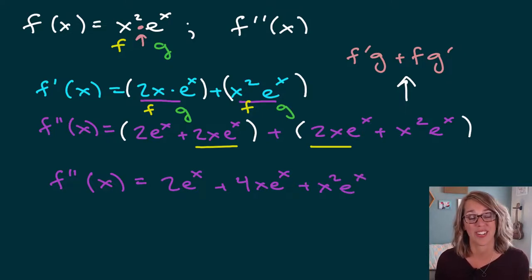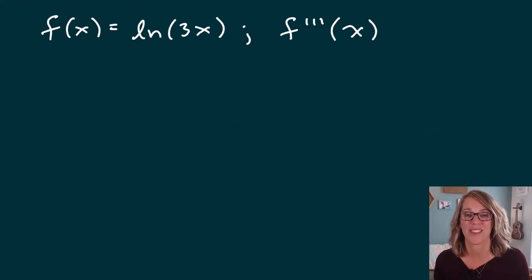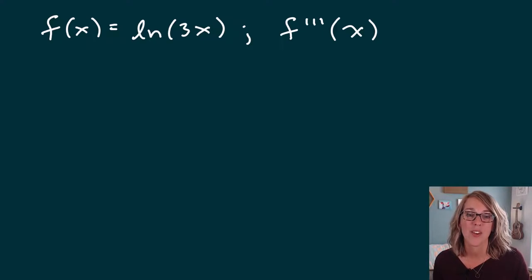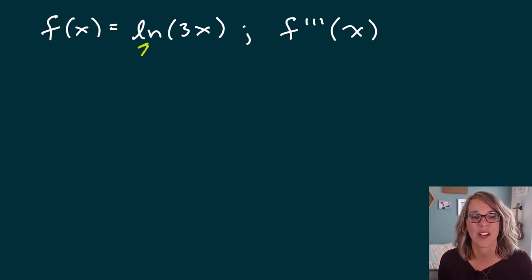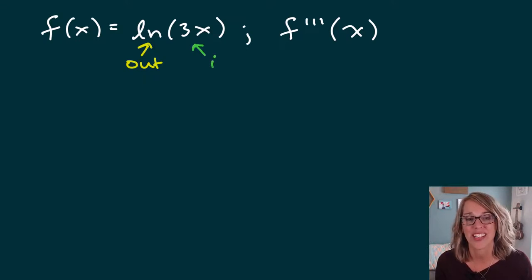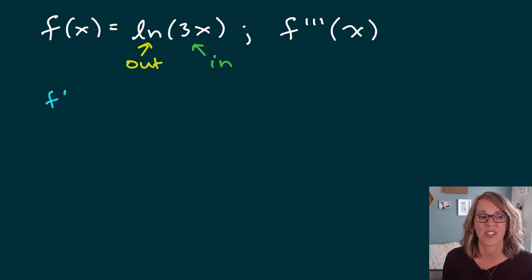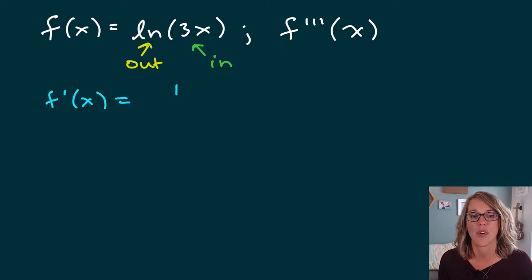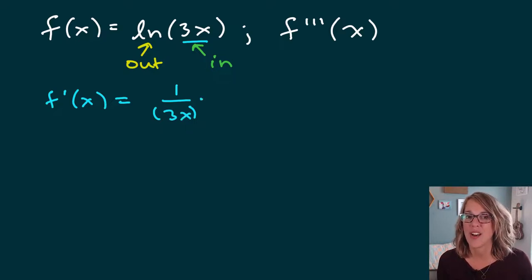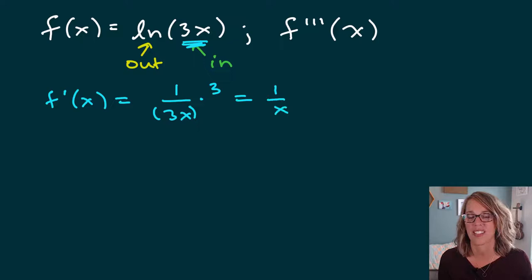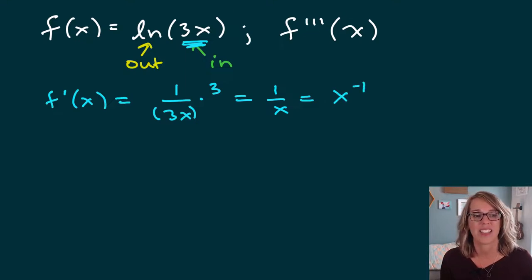Next, let's find a third derivative. In this one, we are looking for the third derivative, meaning we need to take the derivative once, take the derivative of that again for the second derivative, and then finally a third derivative. We do have a chain rule here — my outer function is the natural log and the inner function is 3x. The derivative of the natural log is 1 over whatever is on the inside, and what's on the inside is 3x. Doing the chain rule, the derivative of 3x is 3, and we end up with 1 over x. I'm going to write this as x to the negative 1.